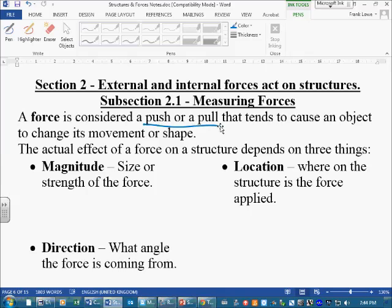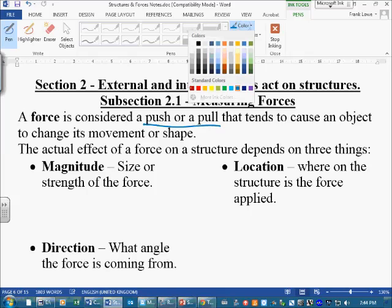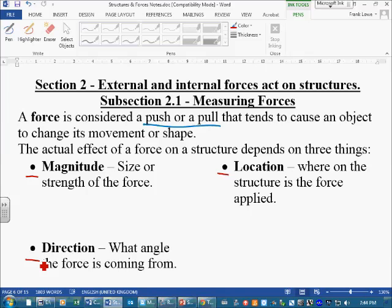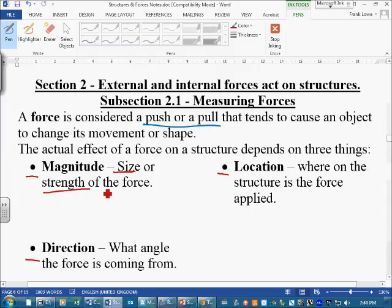The first thing we're going to look at here is these three variables. We're going to look at magnitude, location, and direction, and how those three things affect how a structure moves when influenced by a force. First of all, magnitude - this big word here - simply means the size or the strength of a force. This one's pretty easy.